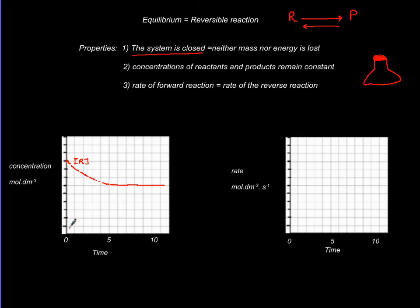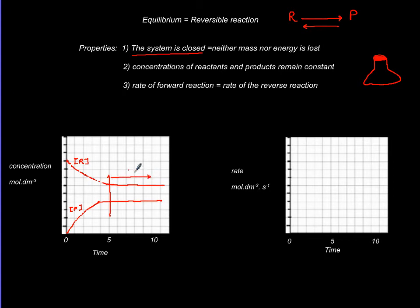That moment of steadiness at 5 minutes is when we can say equilibrium has been reached. Products also come to life as reactants are being consumed, and they convert back into reactants, but at 5 minutes they too reach steadiness. This is the product curve, and at that point equilibrium has come to life.